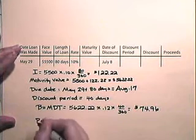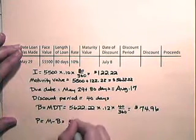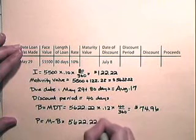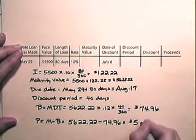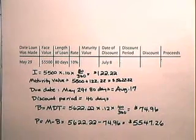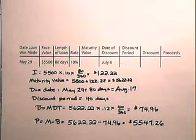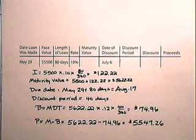The proceeds equal the maturity value minus the bank discount, which is $5,622.22 minus $74.96. So we have discounted a simple interest note 40 days before it was due. The note's maturity value was $5,622.22 if held for the entire term, but on the discount date the value was $5,547.26.